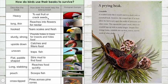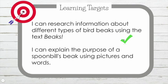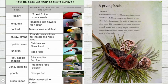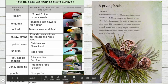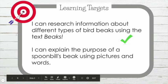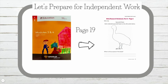Wow, look at all of those beaks — there are ten beaks! They all look different and they have different jobs. I'd say that we can cross off our first learning target; we were able to research information about different types of bird beaks using our text Beaks. Now let's move on to our second learning target: I can explain the purpose of a spoonbill's beak using pictures and words. Can you picture that beak in your mind? If you're having a hard time, look at this photograph from our chart. Let's prepare for our independent work by turning to page 19 in our EL workbook.